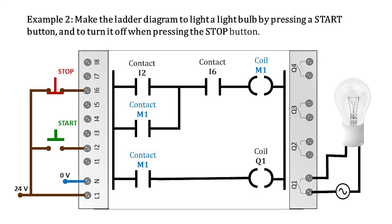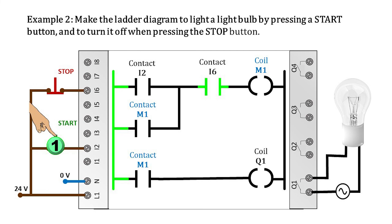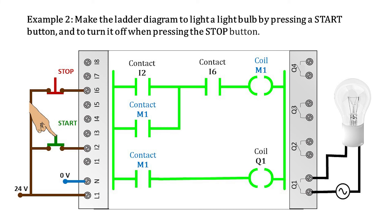When powering up the PLC or starting the simulation, each button will immediately send a signal to its respective input depending on the state they are in. In this case, the stop button sends a logic 1 to its respective I6 contact, causing it to change state — that is, it is activated. So these would be the initial conditions of the process. If we press the start button, it sends a high voltage level to input I2, which translates into a logical 1, activating the I2 contact. When contacts I2 and I6 are both active, coil M1 is also activated. The M1 coil sends a logical 1 to its respective contacts, interlocking the coil and activating the Q1 coil, which sends a signal to turn on the light bulb.